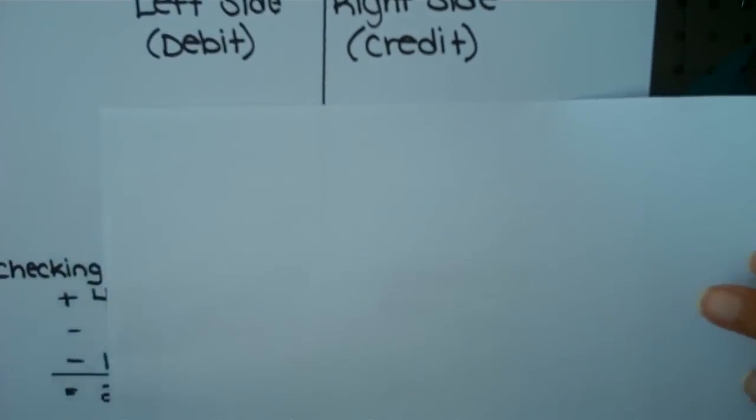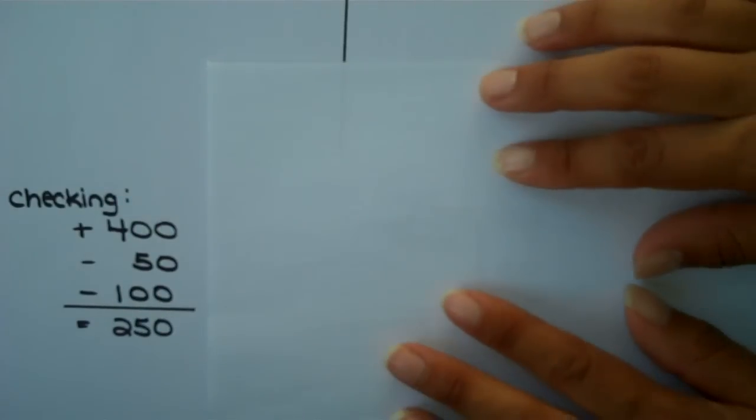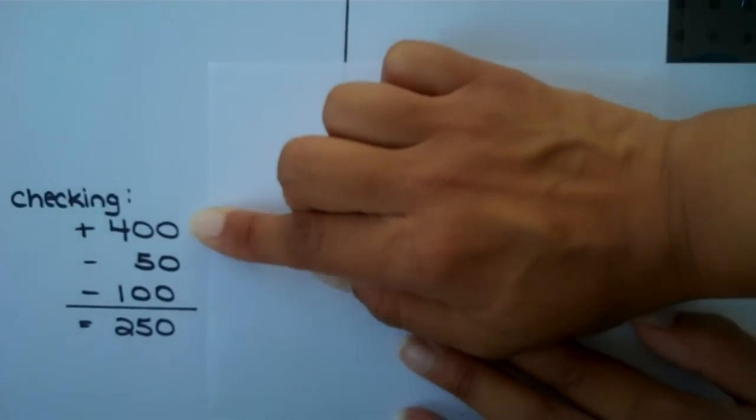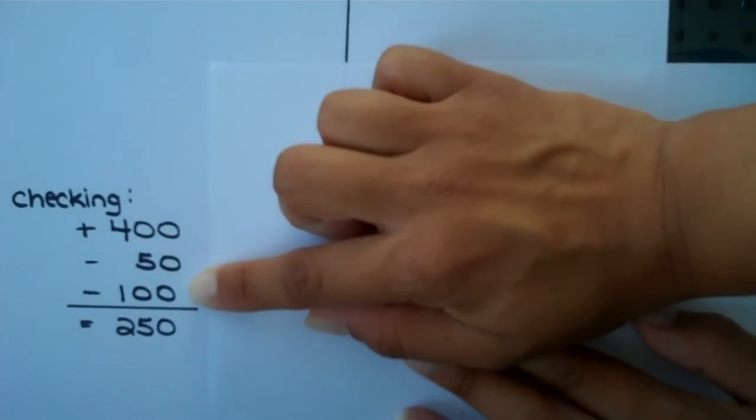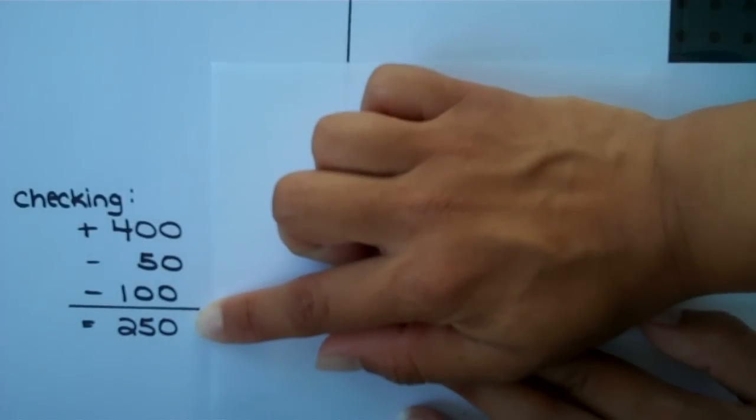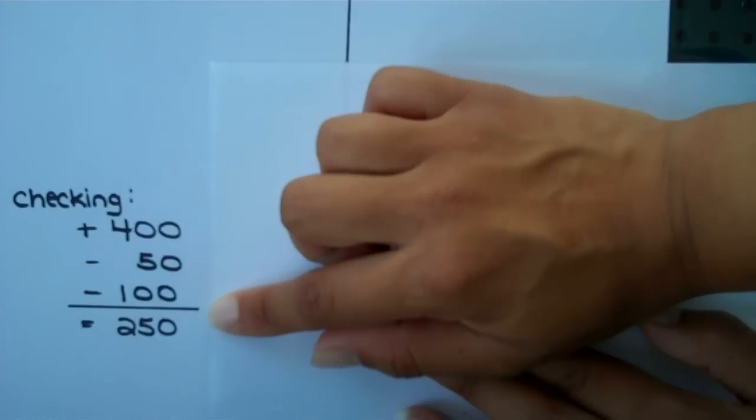To give you an example, in your math class, let's say you have a checking account. You put in $400, you take out $50, you take out another $100, your ending balance is $250. That would be the format that you've learned.